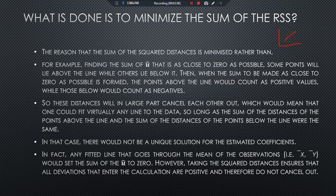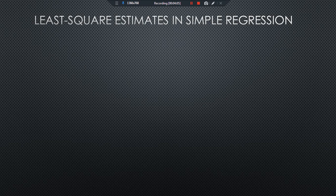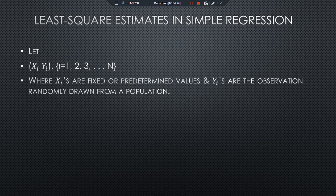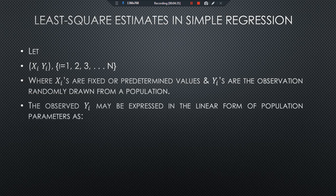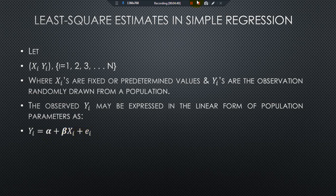So squared values actually represent the actual deviation in the data. For least squares estimation in simple regression, we have two variables: x_i as the independent variable and y_i as the dependent variable, where i denotes the number of observations 1, 2, 3, and so on. Here x is the independent variable with predetermined values, and y is a random variable drawn from a population. The observed value of y may be expressed in the linear form of population parameters as: y_i = α + β·x_i + e_i.